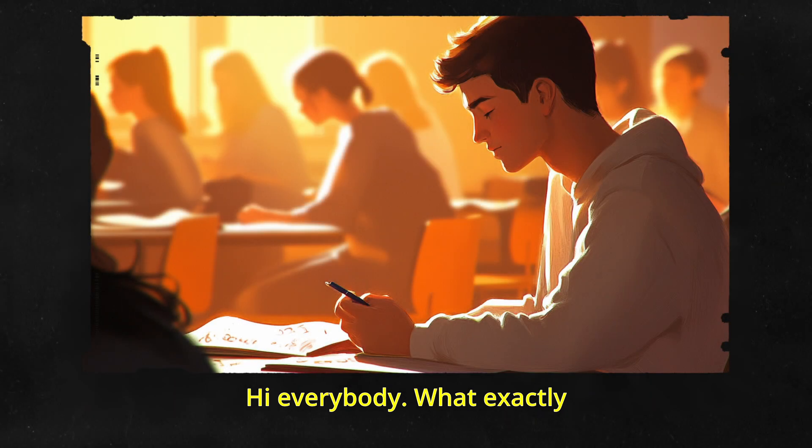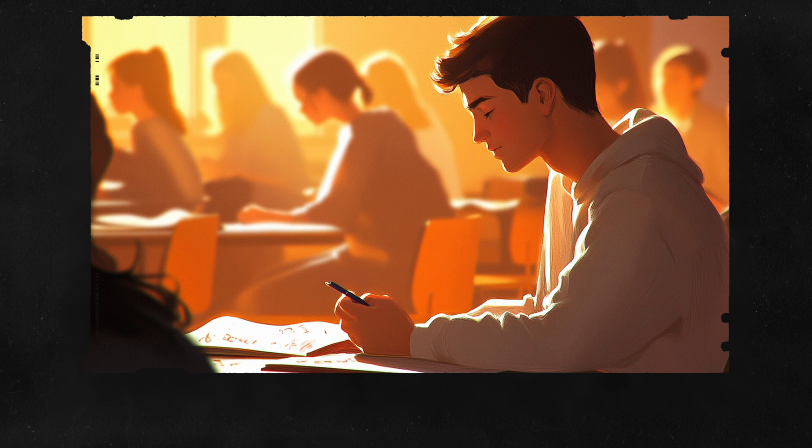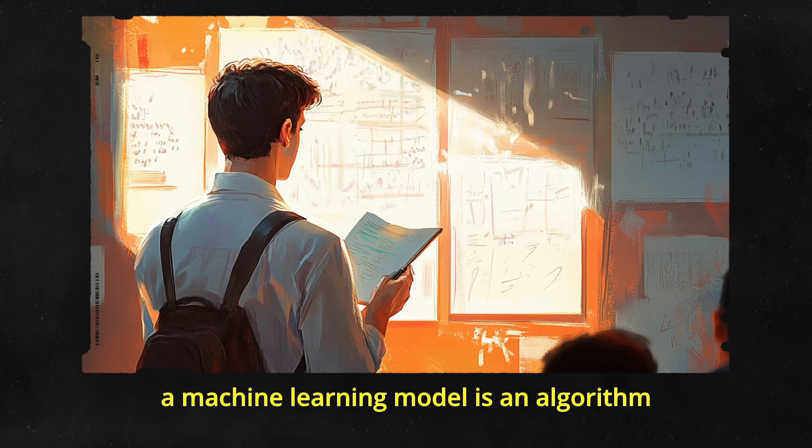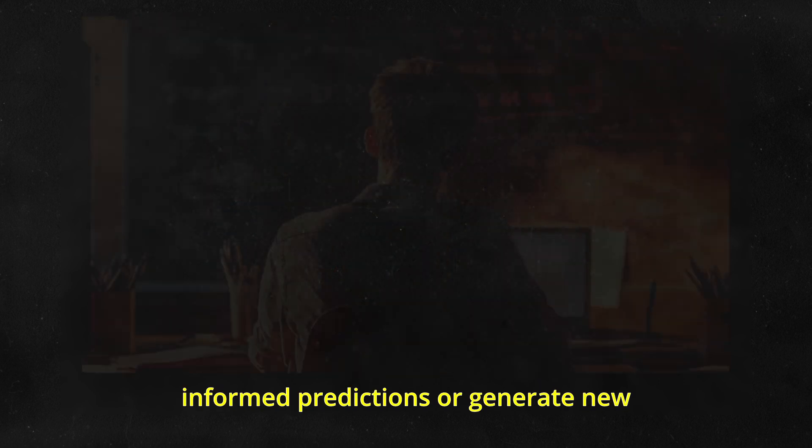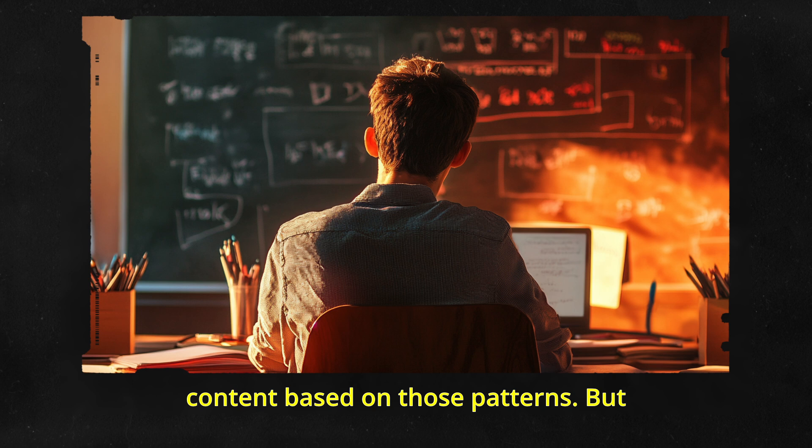Hi everybody. What exactly is a machine learning model? At a high level, a machine learning model is an algorithm or a set of algorithms that are designed to learn patterns from data and make informed predictions or generate new content based on those patterns.